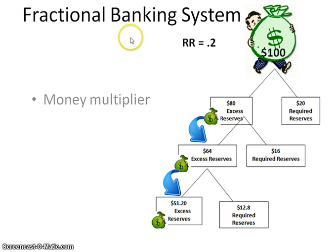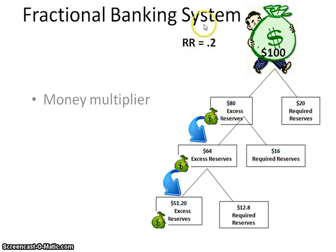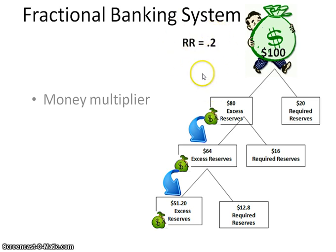When we're talking about a fractional banking system, remember that when somebody deposits money into their checking deposit, a fraction or a portion of it has to be put into the required reserves. The reserve requirement in this case is 0.2, so 0.2 of $100 is put in the required reserves and then the rest is put in the excess reserves.